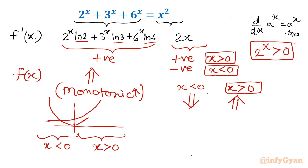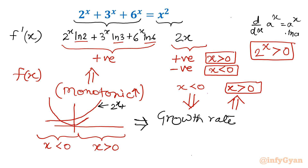For x positive, one strong point is about the growth rate. The function 2^x + 3^x + 6^x has a growth rate much, much faster than the parabola.